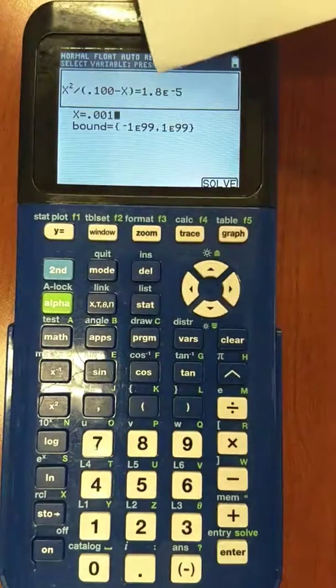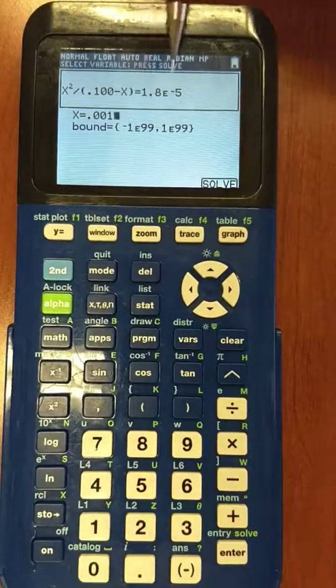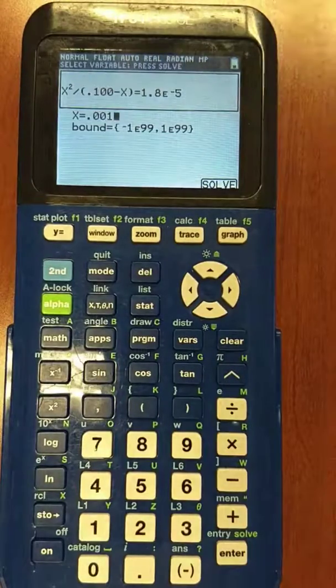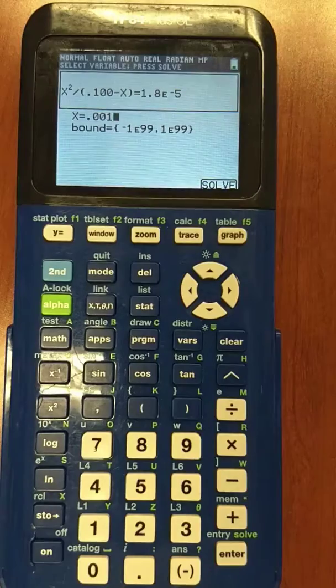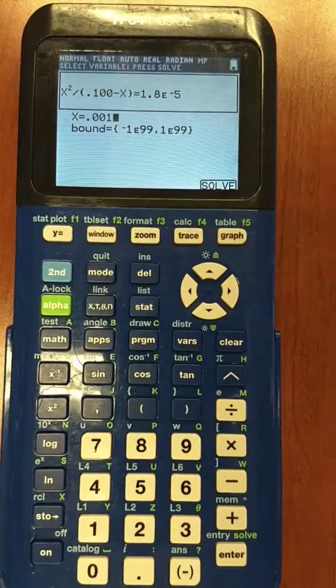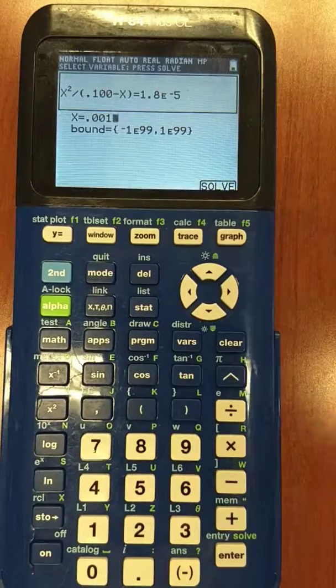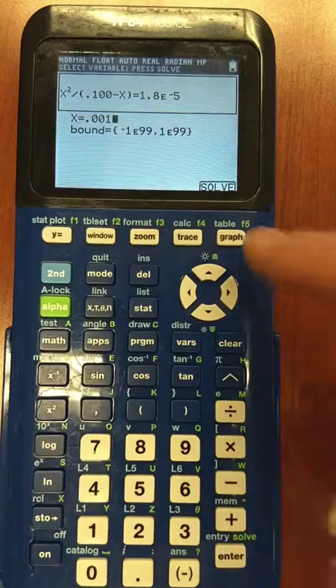But you do have to put in a number. I just kind of did something that mentally looked like about the square root of that number. But anything is OK. 0.01, anything is fine. If you do 50, then it may get angry with you.